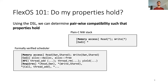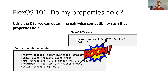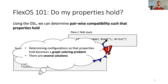Now that we have this DSL and this metadata, we can determine pairwise compatibility such that properties hold. If we take a look again at the verified scheduler and the network stack, clearly we cannot put them together because the network stack does not fulfill the verified scheduler's requirements. Determining configurations so that properties hold becomes a graph coloring problem, and there are several solutions we can further prune based on security and performance.